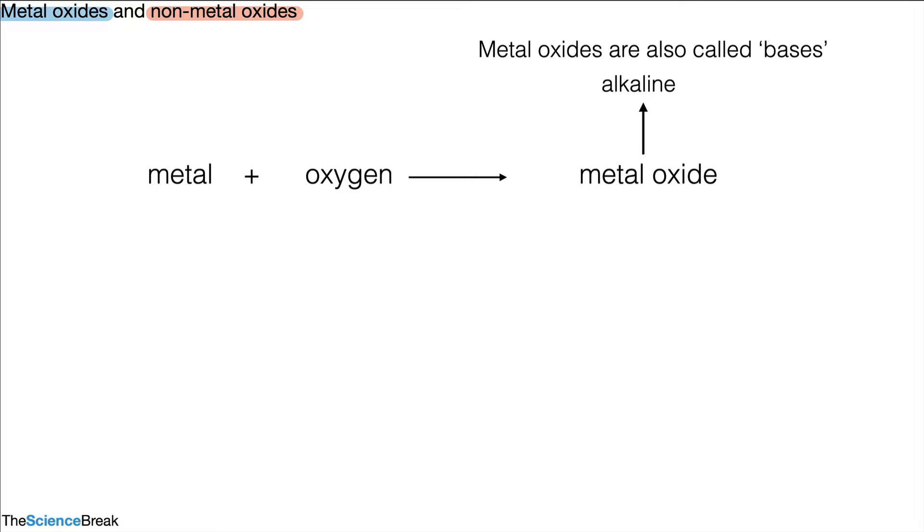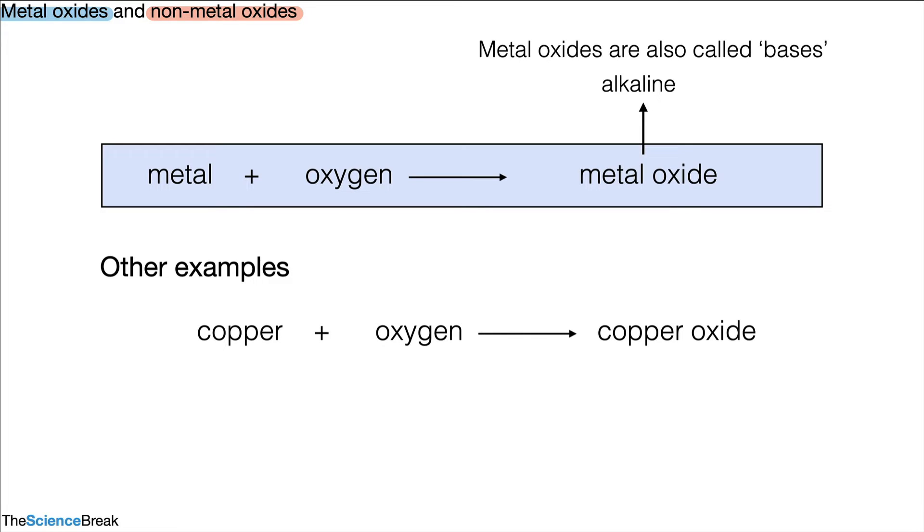We can put a little box around this to make sure we know and remember this idea. A couple more examples of metal oxides include copper oxide made from copper and oxygen, and aluminium oxide made from the reaction of aluminium with oxygen. So this is our metal oxides.